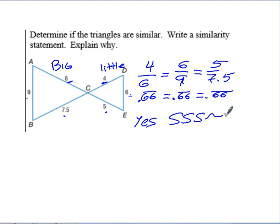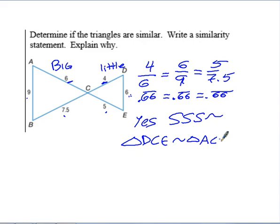The similarity statement here: triangle DCE is similar to triangle ACB. You could also have done this with side-angle-side similarity if you mentioned vertical angles, but that's a different approach.